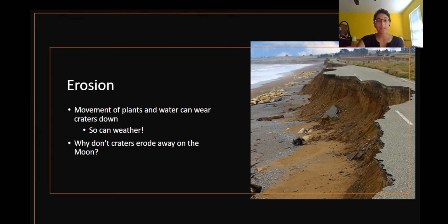Erosion is the process of plant and water moving over time so that it wears stuff down. In our case, erosion wears the craters down. Weather can cause erosion too. For example, natural disasters such as tornadoes or tsunamis can completely destroy craters or other landmarks. Why don't you take a look at this picture? You can see that the waves over time have crashed into the road so much that part of the road is actually gone.